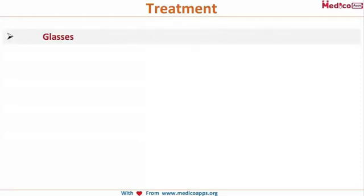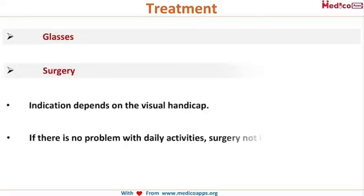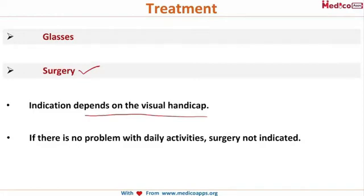The first most commonly used modality is glasses. However, if glasses do not work anymore, we will consider surgery, and the indication for surgery depends on the extent of the visual handicap. How will you decide if a patient needs surgical management for his cataract?